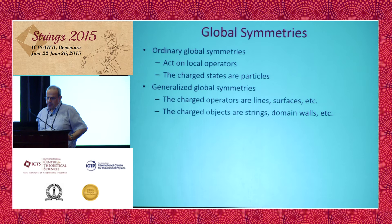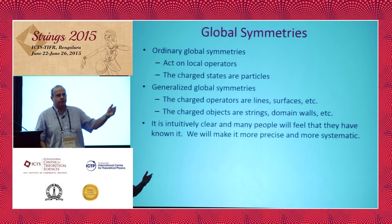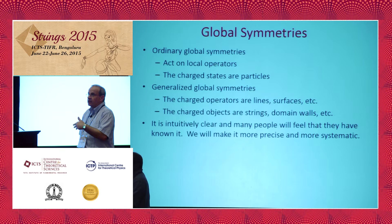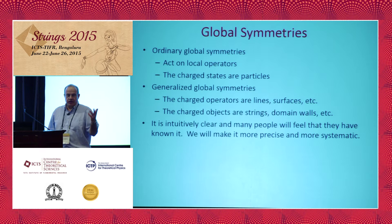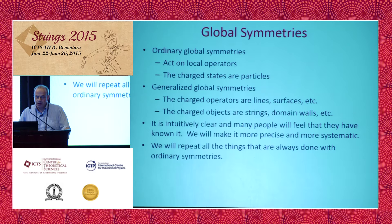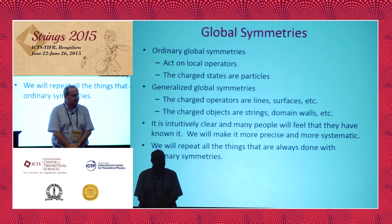This picture is intuitively clear, and a lot of us feel we already know that. People talked about charges per unit volume, which exists in BPS formulas and so forth. The new thing here is that I'll give a more systematic and complete picture of these global symmetries. This more systematic way will give new derivations of known results and will also lead to a long list of new results. We'll take our favorite textbook on quantum field theory and whatever is done for ordinary symmetries, we'll have the opportunity to do it again for these generalized symmetries.